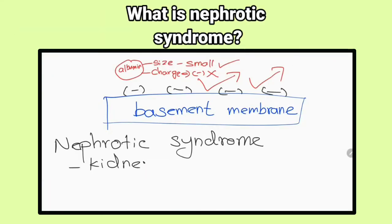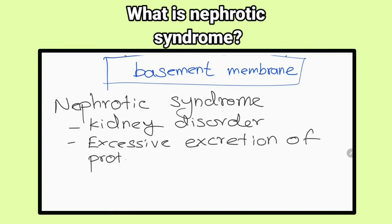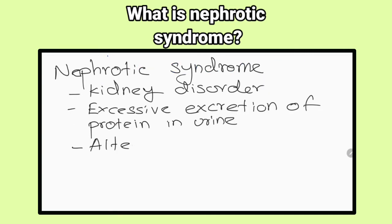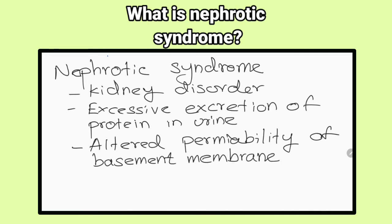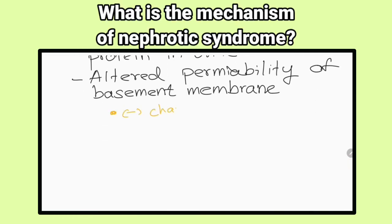What is nephrotic syndrome? It is a kidney disorder marked by excessive excretion of protein in urine due to altered permeability of the basement membrane. What is the mechanism of nephrotic syndrome?